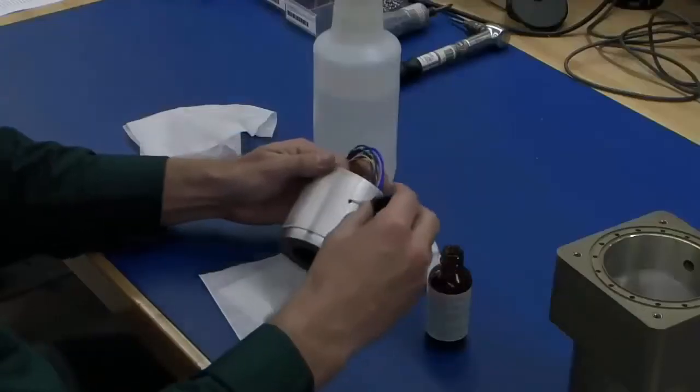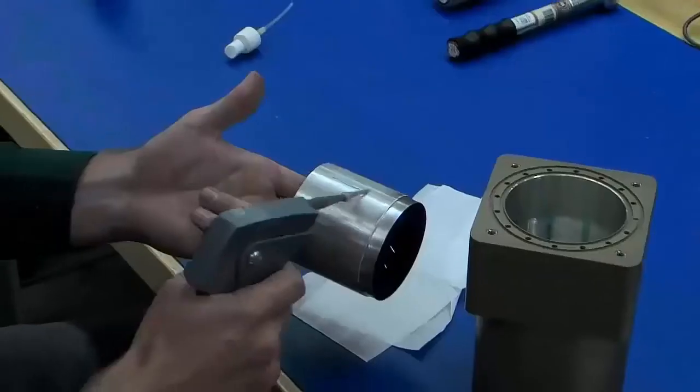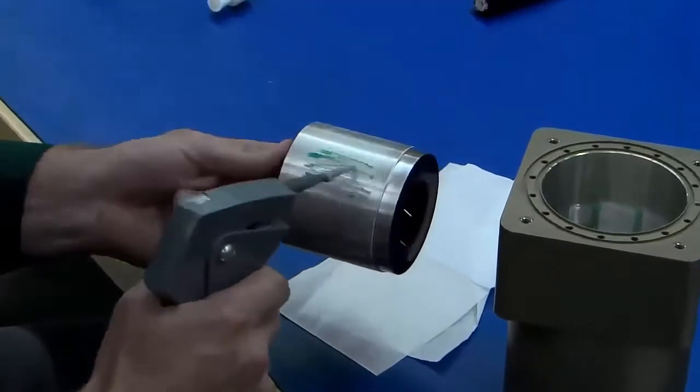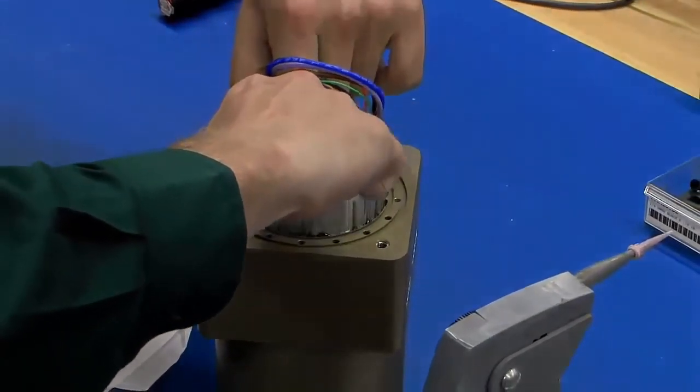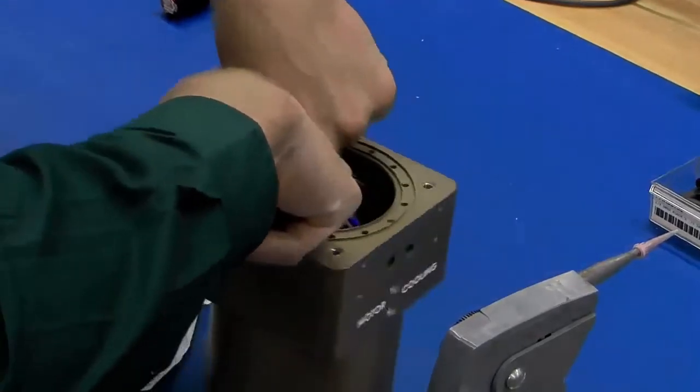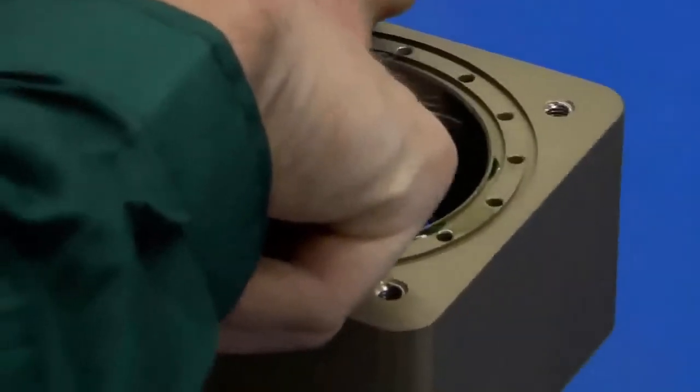After cleaning and priming, Loctite 609 is applied to the inside of the housing and the stator sleeve. The stator is inserted into the housing and rotated to evenly distribute the Loctite before aligning the stator to its final location, in this example where the motor leads will exit the housing.